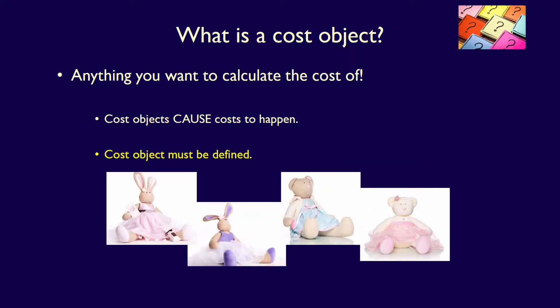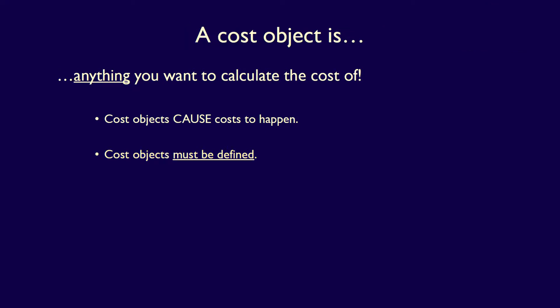If I now decide that the cost object is the whole factory, where I produce stuffed bears and stuffed rabbits, then I would have to accumulate all of the costs for the dancing bear, plus the cost of the other bears, plus all the costs to produce the stuffed rabbits. You can see that as I continue to change the definition of the cost object, I also have to change the costs that I accumulate. So a cost object always causes costs to happen, and you must define the cost object before you start to accumulate the costs.